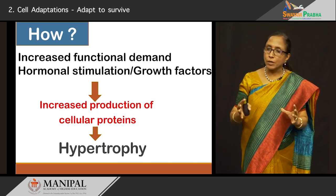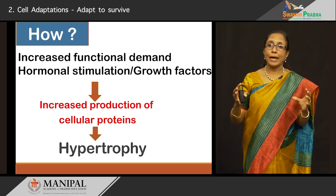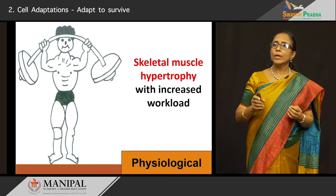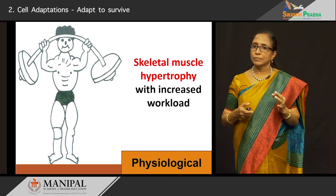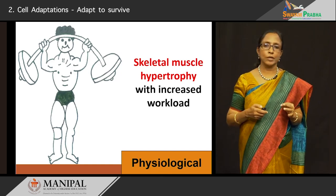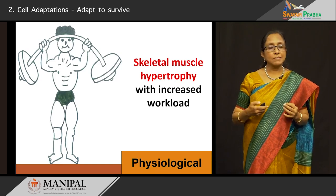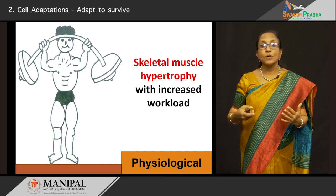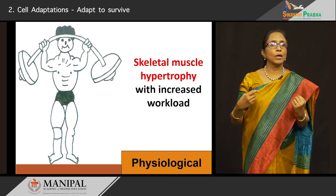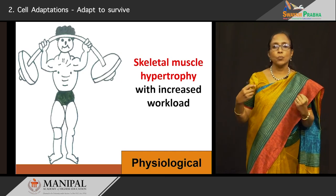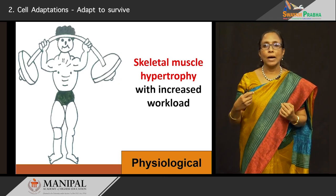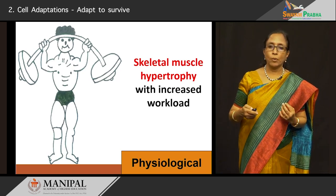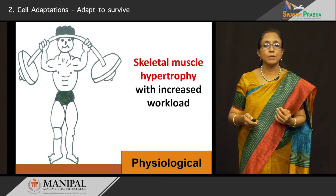Now we will look at some physiological states of hypertrophy. This is very common with increased workload: skeletal muscle hypertrophy. Many bodybuilders are proud of their biceps, triceps, or pectorals. With regular, increased strenuous workout, the skeletal muscles undergo hypertrophy — each skeletal muscle fiber undergoes hypertrophy — and we see the musculature of the bodybuilders. So this is one typical physiological example.